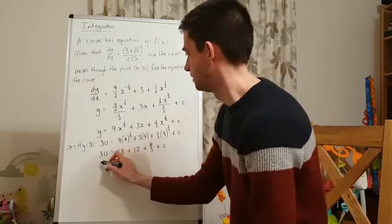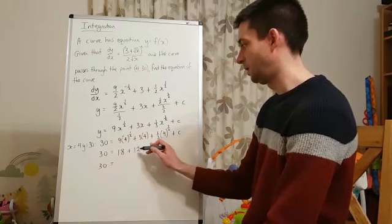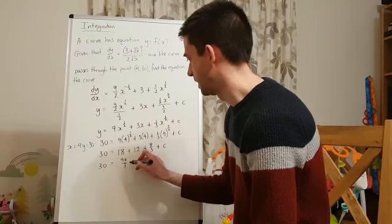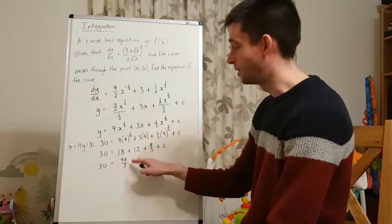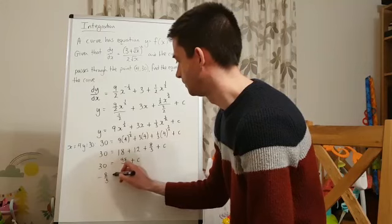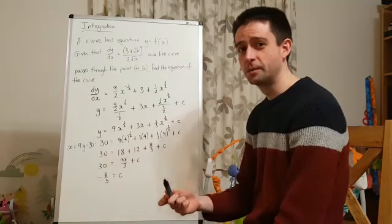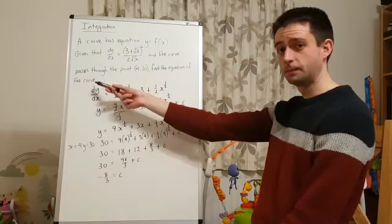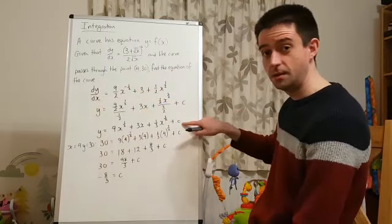So, what that then simplifies to is I have 30 equals, if I add those, I've got 30. I'm actually going to get 98 over 3 by adding those three numbers together plus c. And if I subtract 98 over 3 from 30, I'm going to get negative 8 over 3 for c. Now, crucially, that's not my final answer because the objective was not to find c. The objective was to find the equation of the curve. And the equation of the curve is this, with our value of c included.